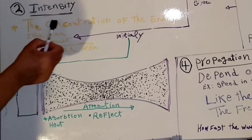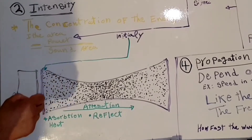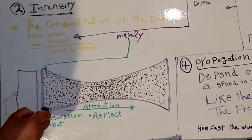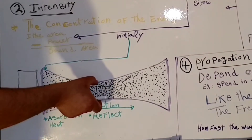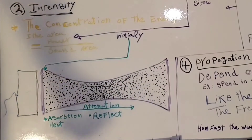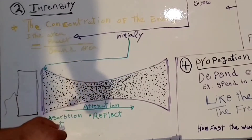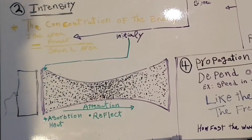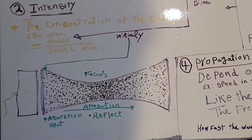Because intensity is the concentration of energy in an area, if we have a sound beam, the beam is wider at the beginning, more narrow in the middle or focused area, and then it diverges again. That's why the concentration of energy at the focus area is greater, and that's why we have more intensity at the focus area, which we call the focus zone.